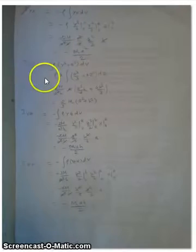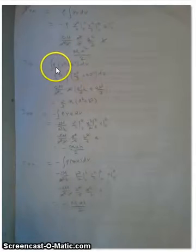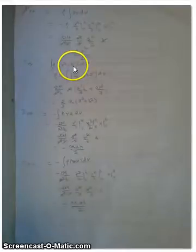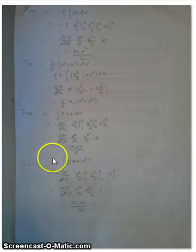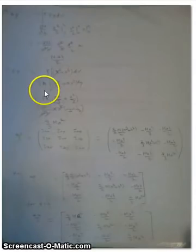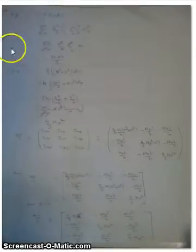IYY component would be integration over the density of X square plus Z square times volume component, and the result is two third of mass A square plus H square. This is the YZ component, and this is ZX component, here is ZY component, and this is ZZ component.